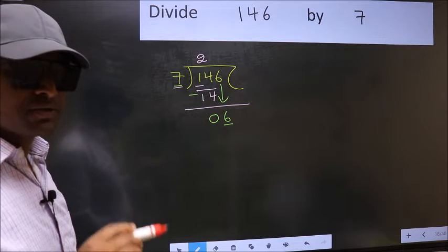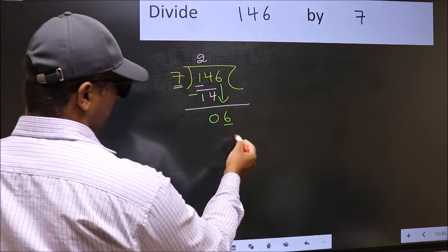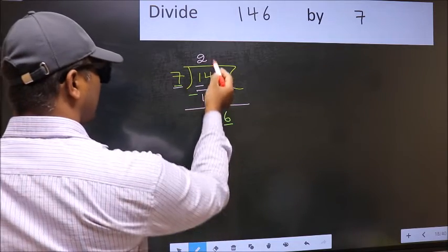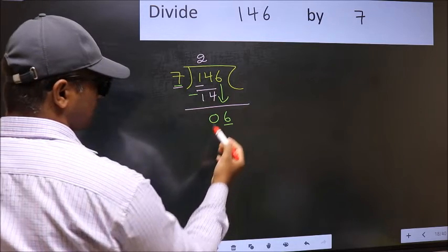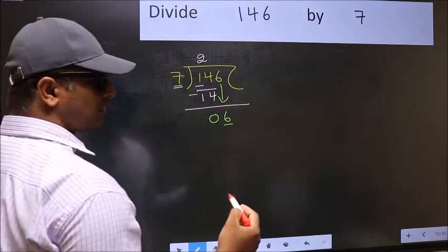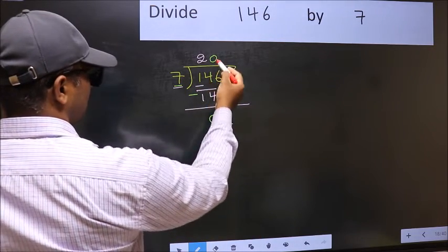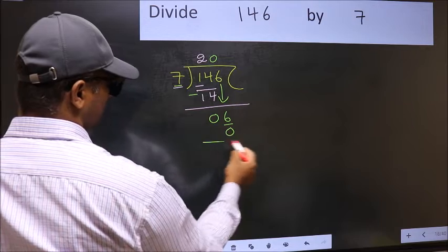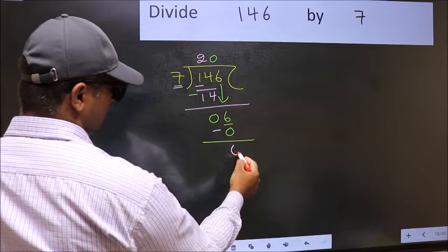Instead, what you should think of doing is: what number should we take here? If I take 1, we will get 7, but 7 is larger than 6. So what we should do is take 0. So 7 times 0 is 0. Now you should subtract: 6 minus 0 equals 6.